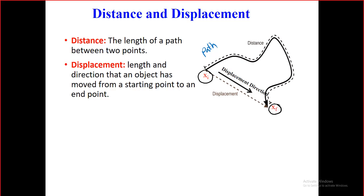Distance is a scalar quantity. Scalar quantities are quantities in physics that need only values to be fully defined — like temperature, mass, volume, density. When I say the mass of a book is 2 kilograms, adding a direction ('to the right' or 'to the left') adds no information. Mass doesn't need a direction, so it's a scalar quantity.